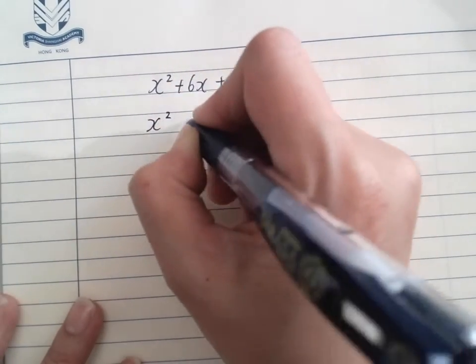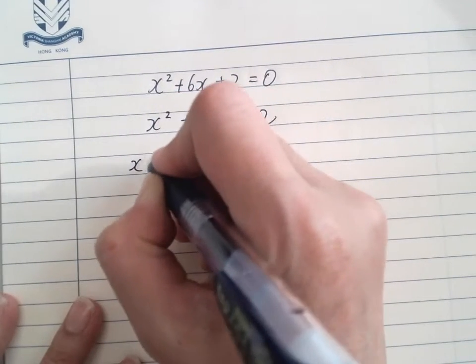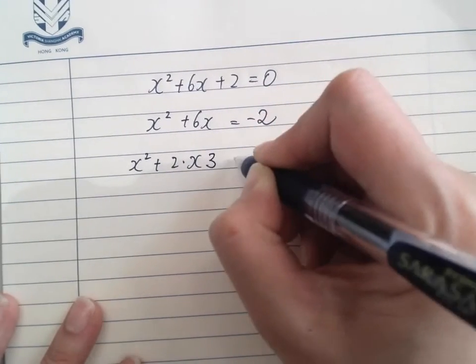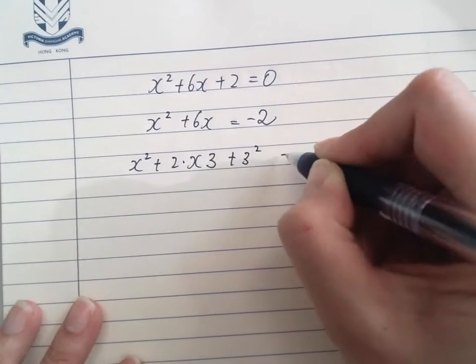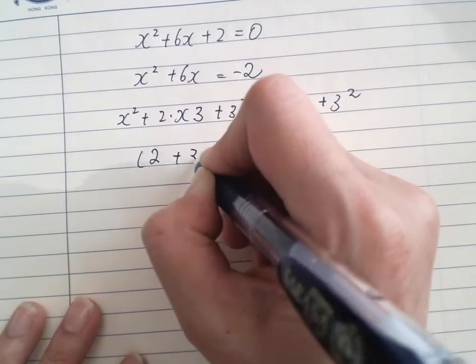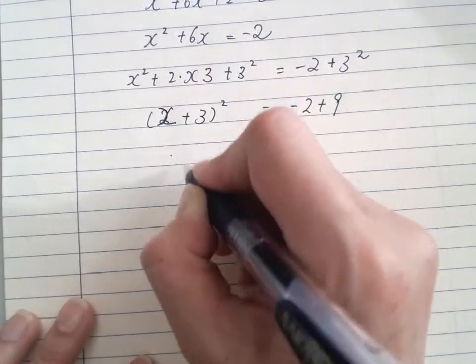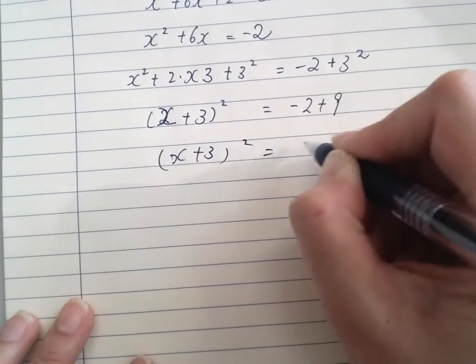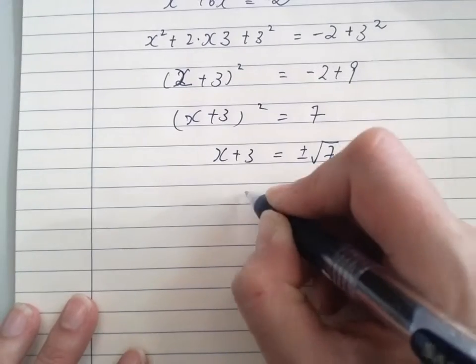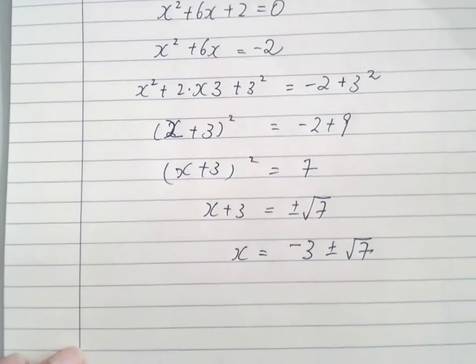First things first: we have x²+6x = -2, throwing the constant to the other side. We have x²+2ab+b², so we add b² = 9 on the other side as well. So (x+3)² = -2+9 = 7. x+3 = ±√7, so x = -3±√7. It's not too bad, isn't it?